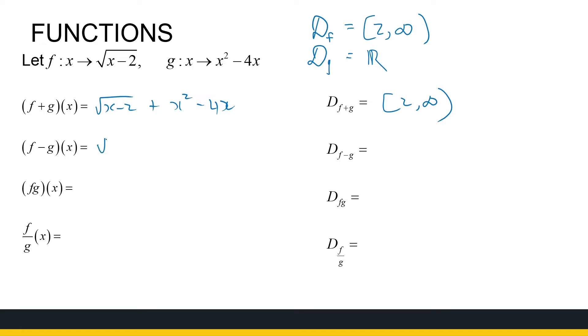The difference function, square root of x minus 2 minus, now just take note, we'll need a bracket, x squared minus 4x, because we're subtracting the whole of g of x. So that's the root of x minus 2 minus x squared plus 4x. But the domain is again the intersection of the two domains from 2 to infinity.